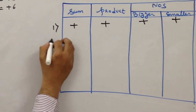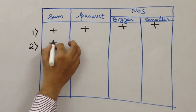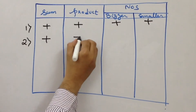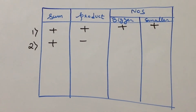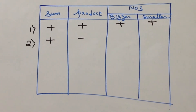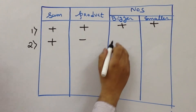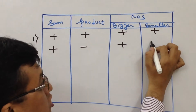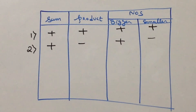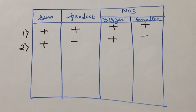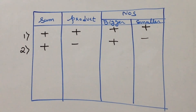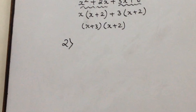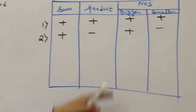The second probability is when the sum is plus but the product is minus. Then the bigger number is going to be plus and the smaller number is going to be minus. Let's take a simple example based on that, where this particular criteria fits out.